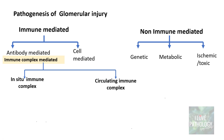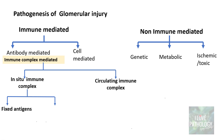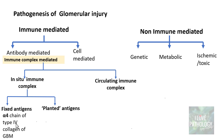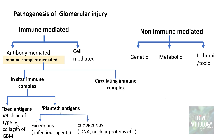The immune mediated causes, particularly the antibody mediated or immune complex mediated, can be further categorized into in-situ immune complex and circulating immune complexes. In-situ immune complex means the antigens are present within the glomerular basement membrane — these could be fixed antigens or planted antigens. The example of a fixed antigen is the alpha-4 chain of type 4 collagen of the glomerular basement membrane, whereas planted antigens can be either exogenous or endogenous.